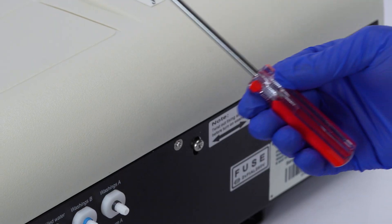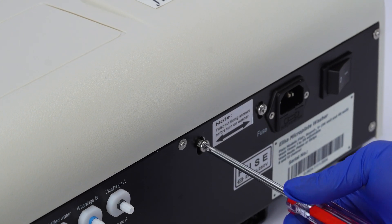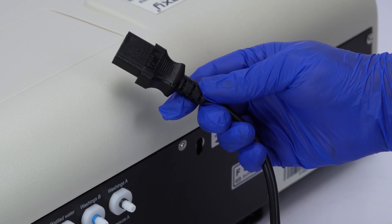Before starting, use a screwdriver to remove the safety screw from the ELISA washer and attach the power cord to the machine.